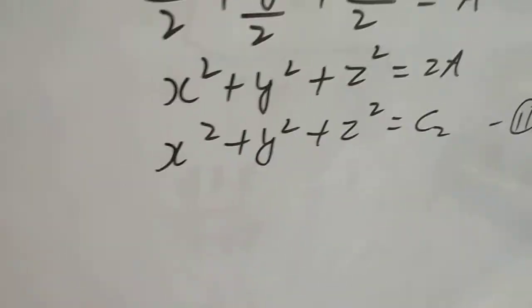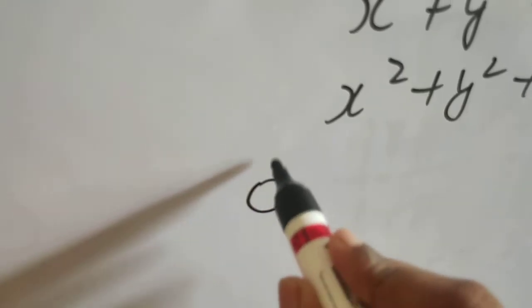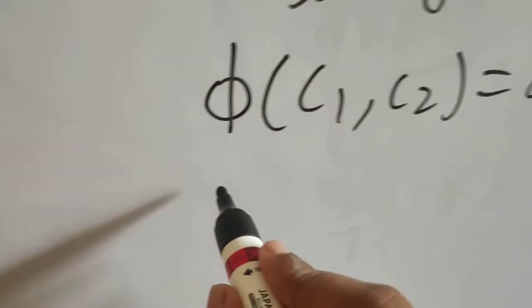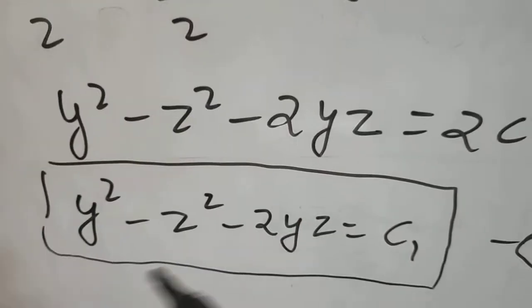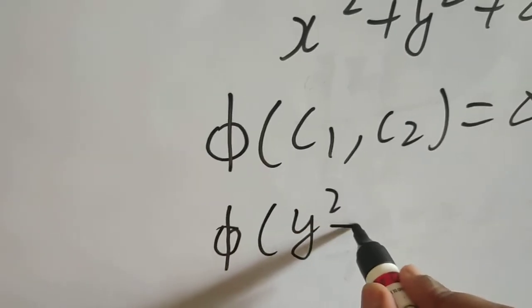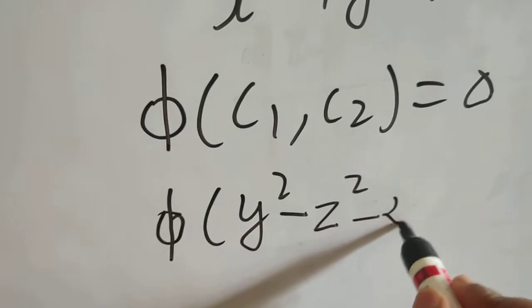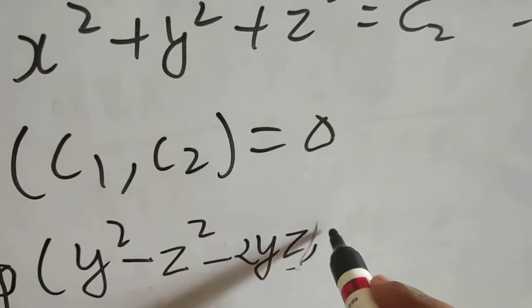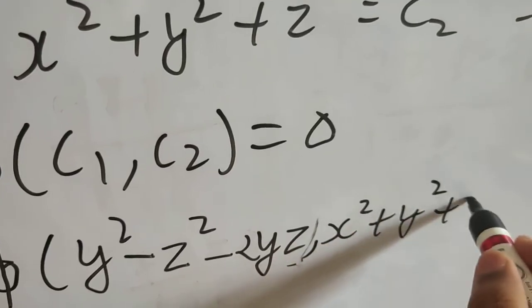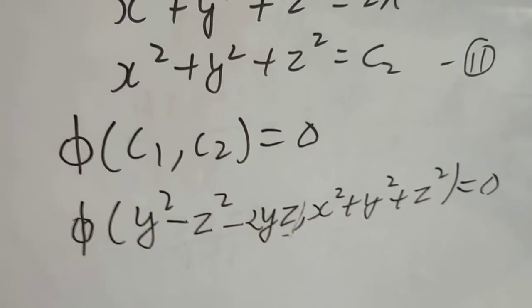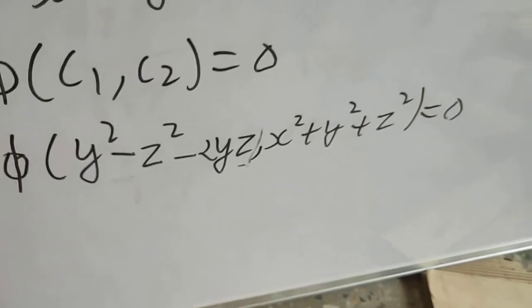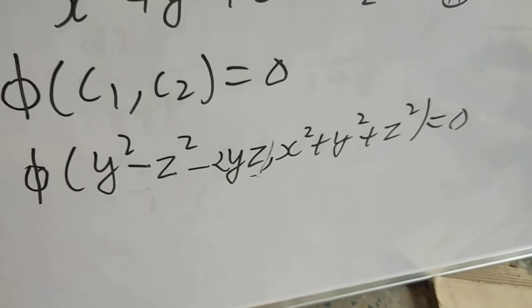So, if I want to write my final solution, that will be phi of c1 comma c2 equal to 0. So, phi of what is my c1? That is y square minus z square minus 2 yz. Y square minus z square minus 2 yz. And what is the second one? X square plus y square plus z square. This is my final solution. I hope you are able to see this. Because this board is straight touching the floor. So, I am not able to write properly. So, this is it. Y square minus z square minus 2 yz. And x square plus y square plus z square equals to 0.